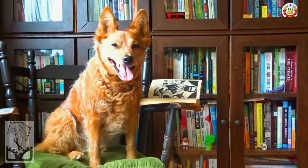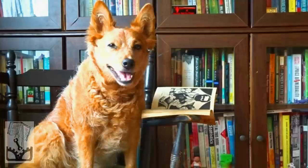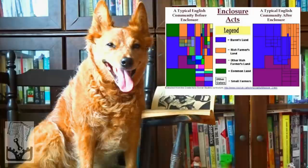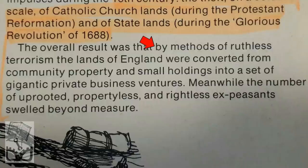Chapter 14: The Making of the Working Class. It's very important to remember that this conversion to a capitalist system wasn't natural or something that just happened — it was forced onto the population by expropriation of the peasants' land, land enclosures, and laws against vagrancy. Smith and Evans explain: 'By methods of ruthless terrorism, the lands of England were converted from community property and small holdings into a set of gigantic private business ventures. Meanwhile, the number of uprooted, propertyless, and rightless ex-peasants swelled beyond measure.'